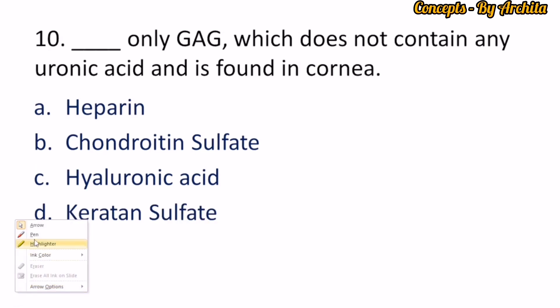Question 10: Fill in the blank — which is the only GAG that does not contain any uronic acid and is found in the cornea? If you watched my mucopolysaccharides lecture carefully, you would know this answer. The options are heparin, chondroitin sulfate, hyaluronic acid, and keratan sulfate.